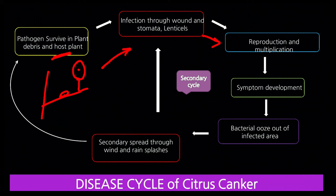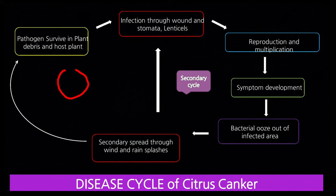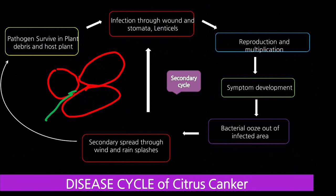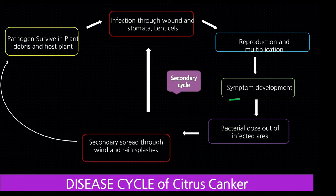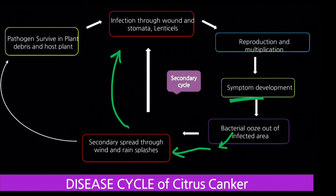One important thing to remember: between cells there is a space called intercellular space or periplasmic space — this is where bacteria multiply. After that, symptoms develop. The bacteria come out from infected parts during the rainy season and infect other plants — this is the secondary infection cycle.